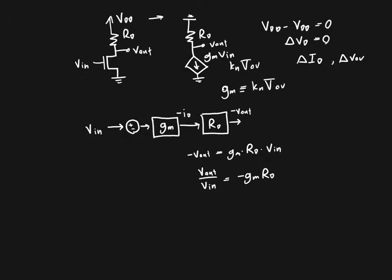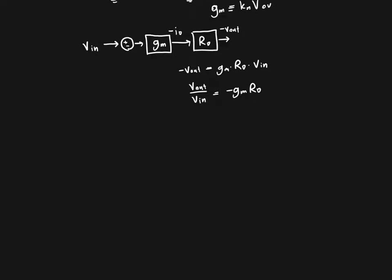Okay. So that's just a simple way of analyzing the common source amplifier. But it becomes much more powerful when we want to change the circuit. So let's say we've got the same circuit as above. So we've got Vn, we've got Rd, we've got Vdd. But we add a resistor down here. It's going to be called Rs.